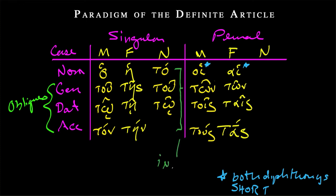And something that will be a handy thing to remember throughout learning Greek is that in the neuter, the nominative in neuter equals the accusative form always.